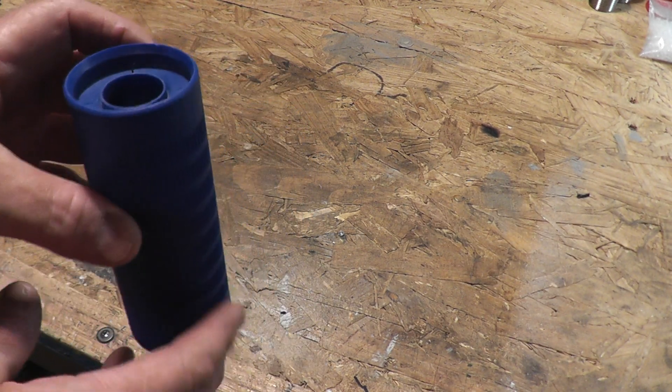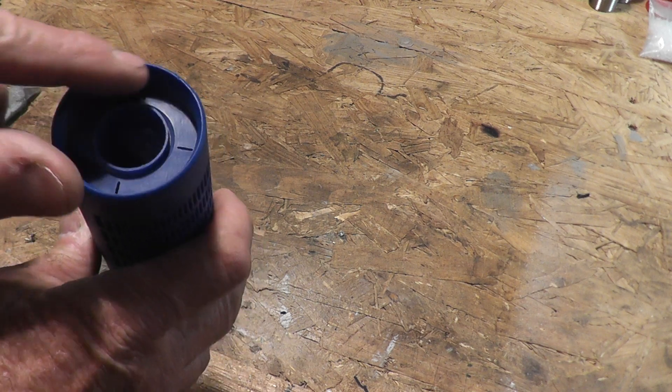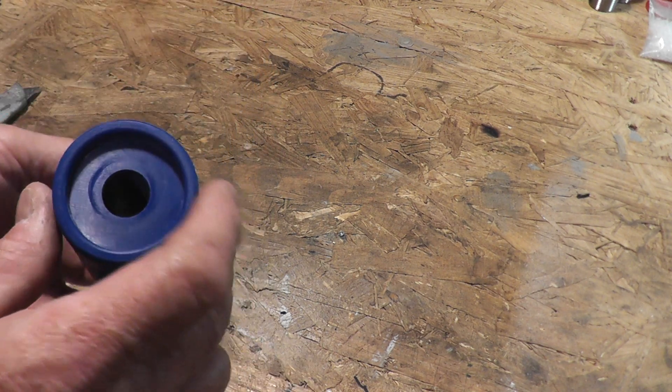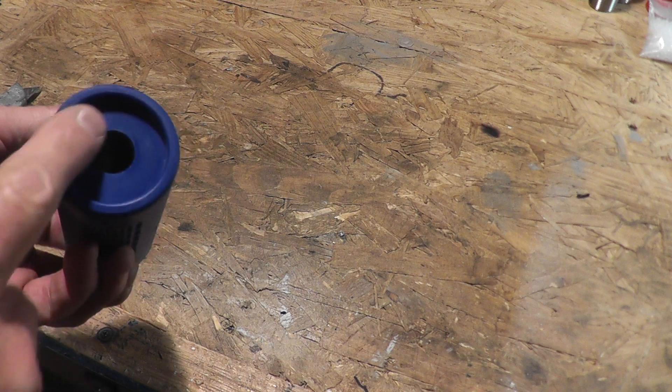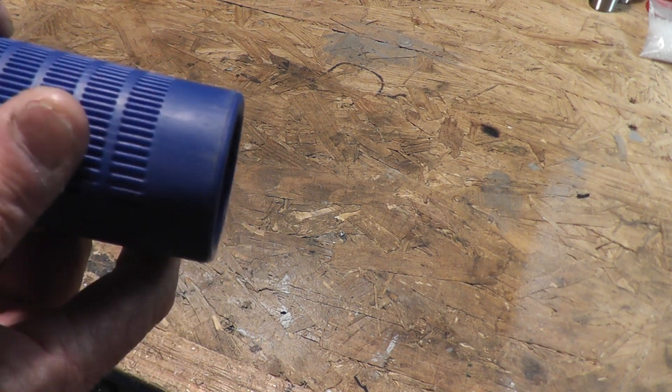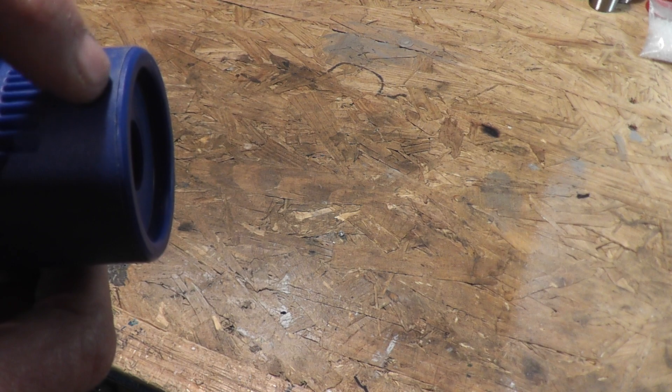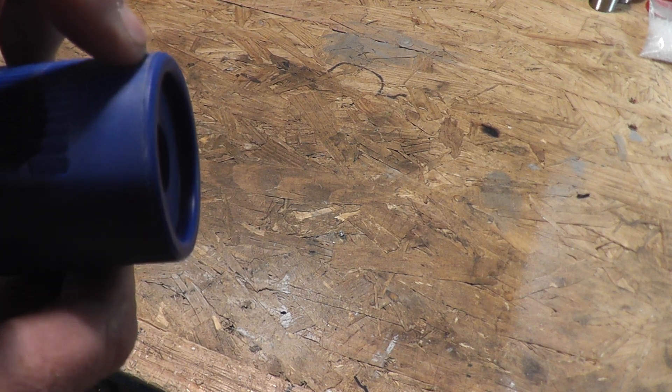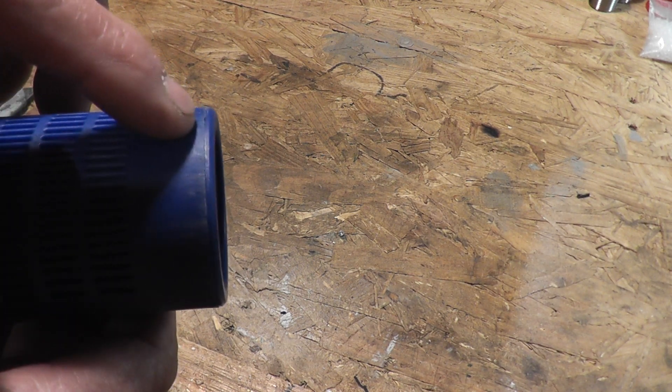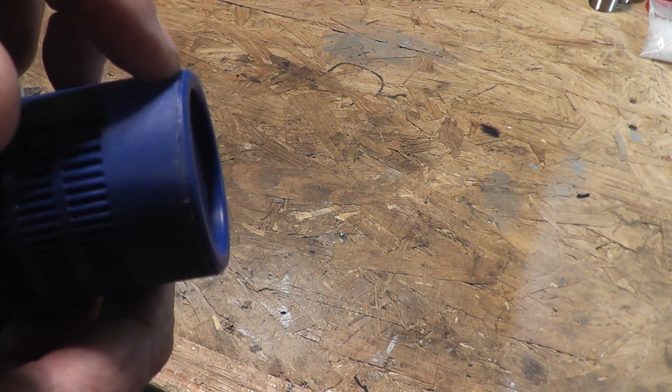If you look at the cartridge closely, you've got a vented end with four slots in one end and a solid end. We're going to be working from the solid end. If you can see, there is a seam right here, and I'm going to show you how to break that seam so you can take this apart.